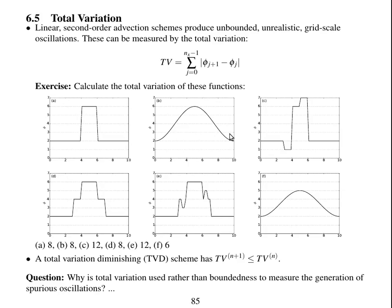You wouldn't get something that generates that, because as well as being unbounded, it's generated new local extrema. So total variation diminishing schemes diminish the total variation. This one's got smaller total variation, so a TVD scheme might produce something like this.